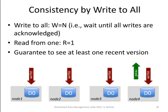How can we configure the system to guarantee consistency? The first configuration is called 'write to all.' In write-to-all, we set the parameter W equal to N — we wait before the client gets the acknowledgement until all writes have been acknowledged, meaning all nodes have been updated. This gives us a consistent view. If you insist on writing to all, then it's enough to read from just one node and still be guaranteed to get the latest version. This is good for systems with very many reads but very few writes, because writes are a bit slower since we wait until all of them have been processed.